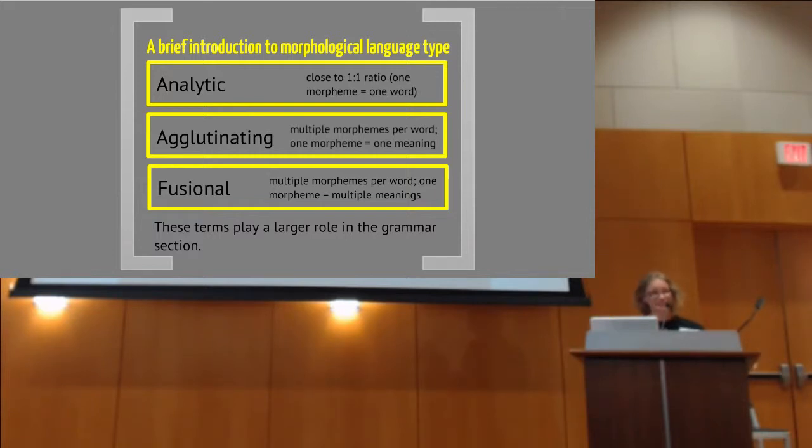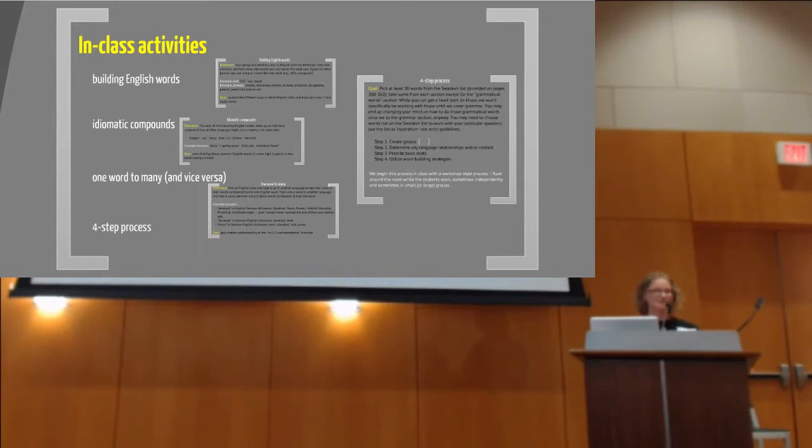So after they get lecture, which I guarantee you is the best lecture they've ever had in any college course. After they get this lecture, this introduction, we move on to the in-class activities. And I have four primary ones for the words section, focusing on how we build words in English, looking at what I call the idiomatic compounds, remembering that there is no one-to-one correspondence in languages, and then I take them through a four-step process of how you can start to create words.